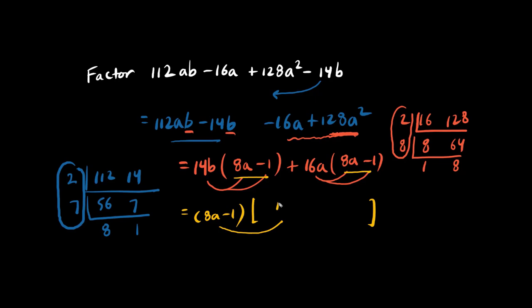8a minus 1 times 14b becomes the first giant term. And 8a minus 1 times 16a becomes the second giant term. That was a lot of work.